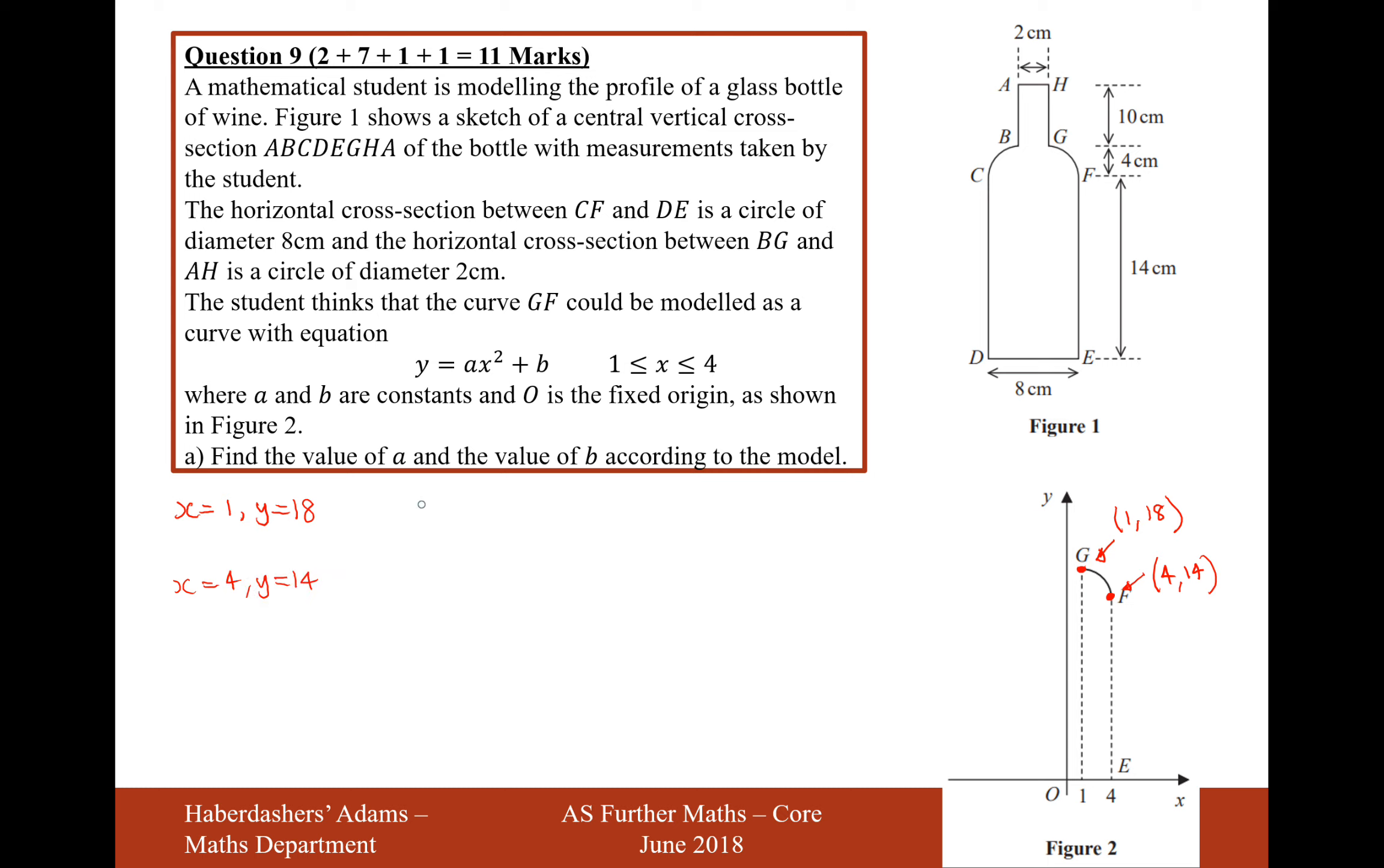So let's substitute these in then, so it's going to be 18 equals 1X squared, so that's going to be A plus B, and then the next bit here is going to be 14 equals 4 squared is 16, 16 times A plus B.